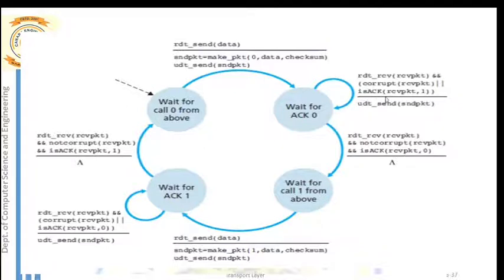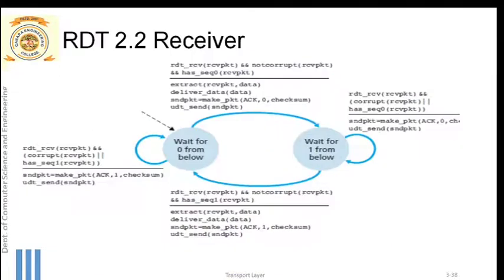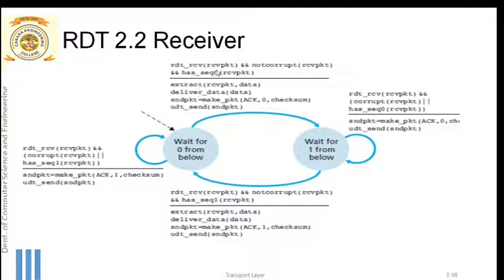RDT 2.2 sender is the same as RDT 2.1, with one key difference: instead of using is_NAK, only positive acknowledgements are used (is_ACK). This makes RDT 2.2 a NAK-free protocol. On the receiver side, the receiver waits for data to arrive from the network layer — waiting for a packet with sequence number zero.